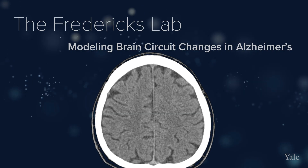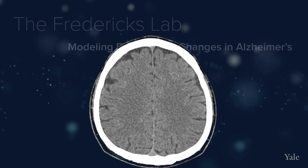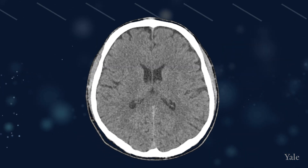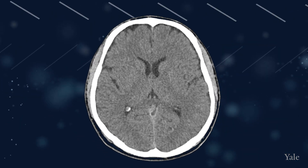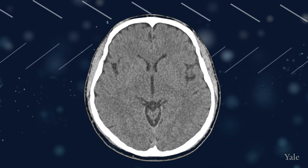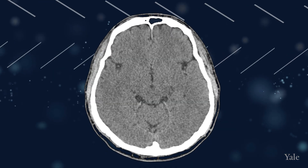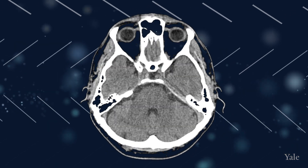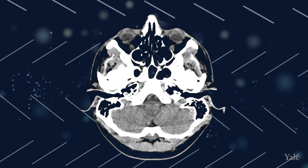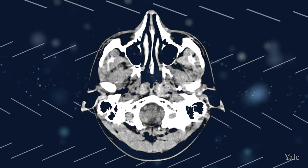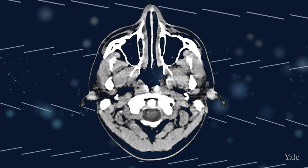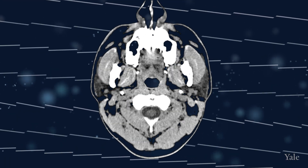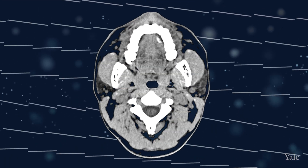Alzheimer's disease is a pathologic process where proteins — amyloid and tau — accumulate in the brain. Both of these are naturally occurring proteins that exist in healthy forms in the body. They gunk up, become abnormally folded, and accumulate in ways that they wouldn't accumulate in health.